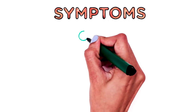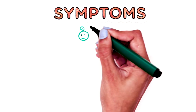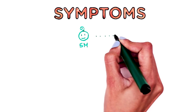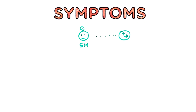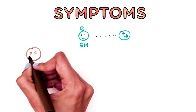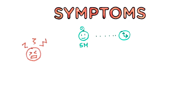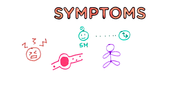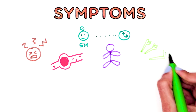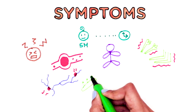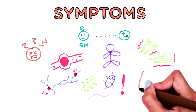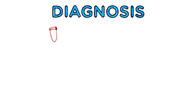Symptoms of sickle cell anemia usually appear around five months of age. They vary from person to person and can even change over time. Some symptoms include periods of pain that can last a few hours to a few days, blood clots, swelling in hands and feet, joint pain that resembles arthritis, chronic neuropathic pain, life-threatening infections, and anemia.